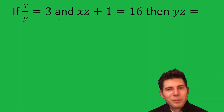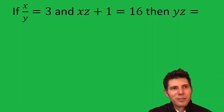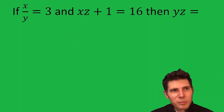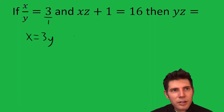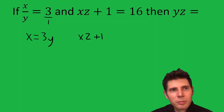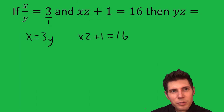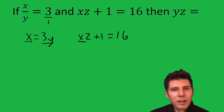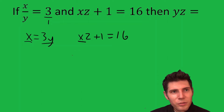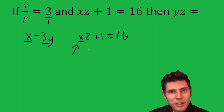So this looks a little crazy, but it's not too bad. First thing, let's cross multiply over here, so we get x equals 3y. Now bring this down: xz plus 1 equals 16. We have x equals 3y, which is a convenient thing that we can now substitute. I'm going to substitute for this x a 3y.